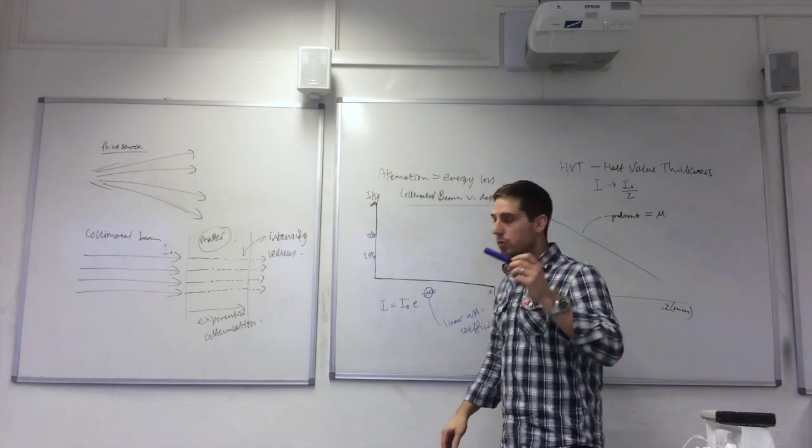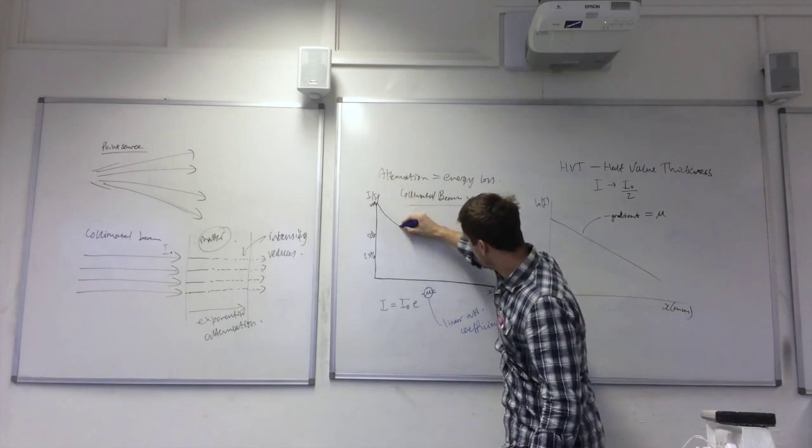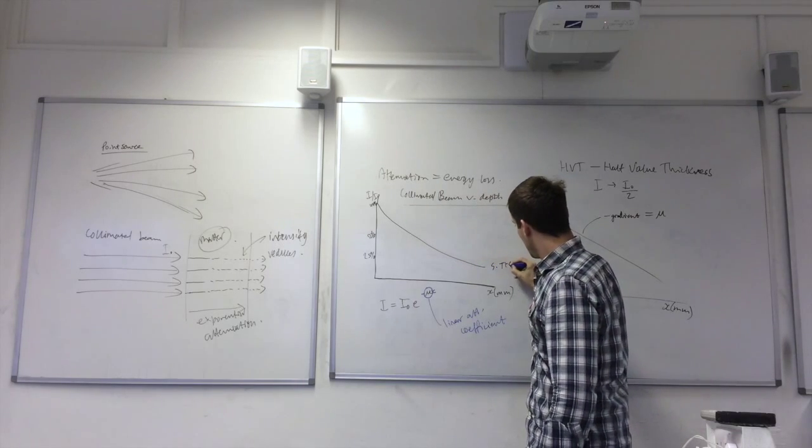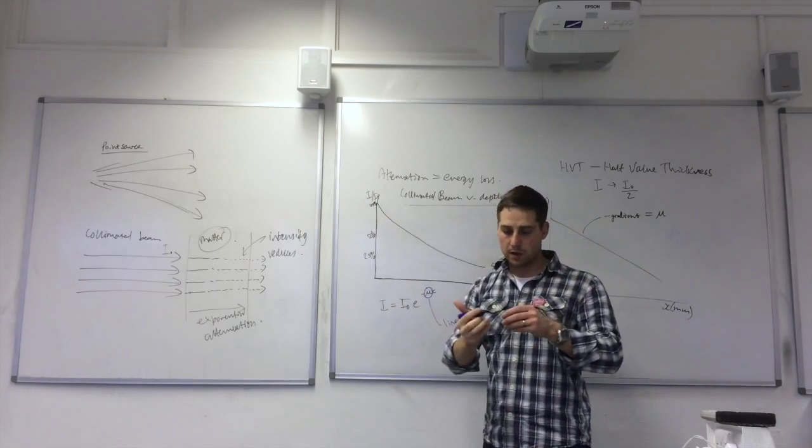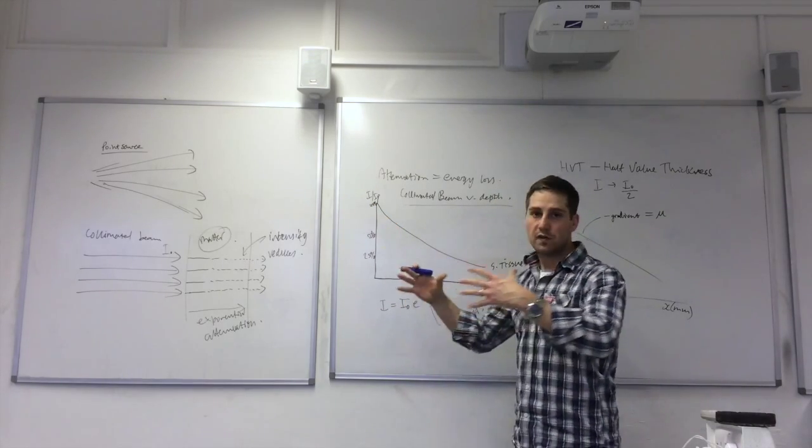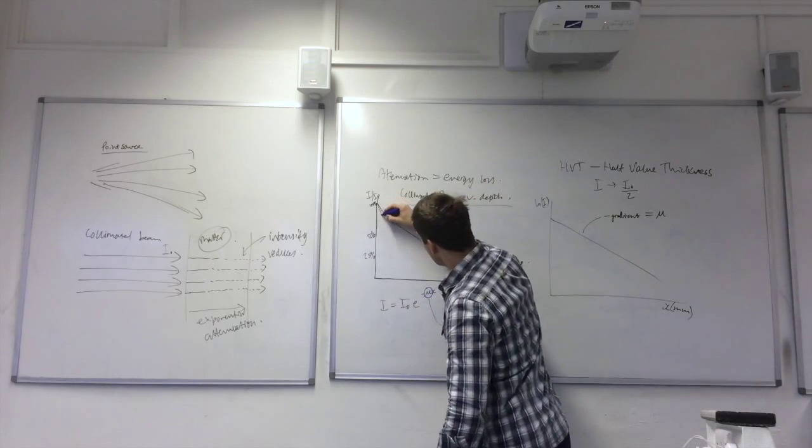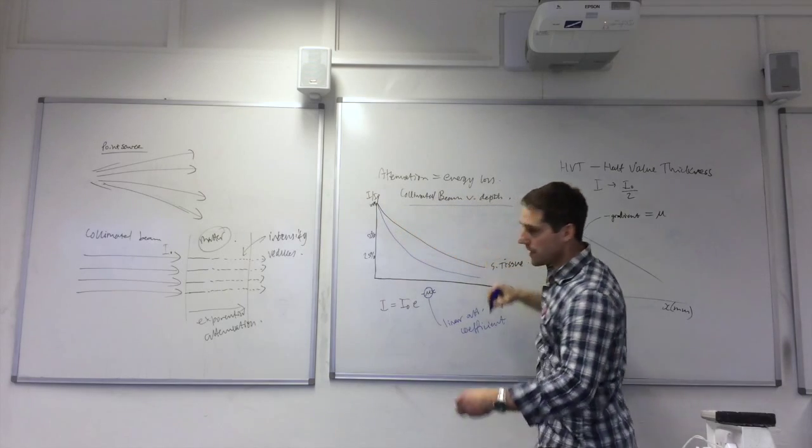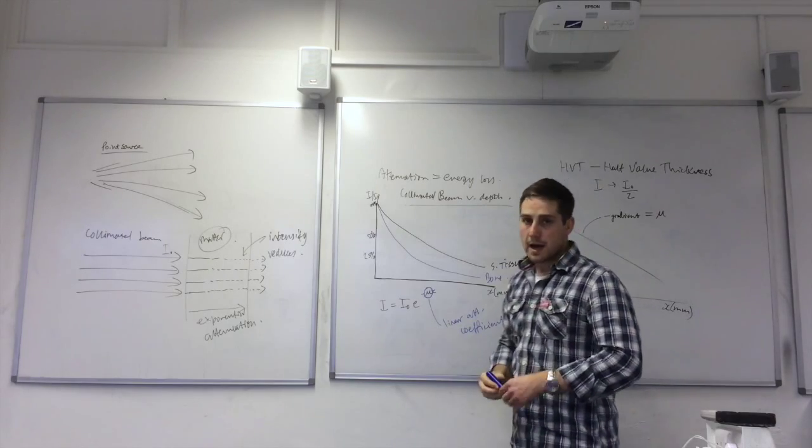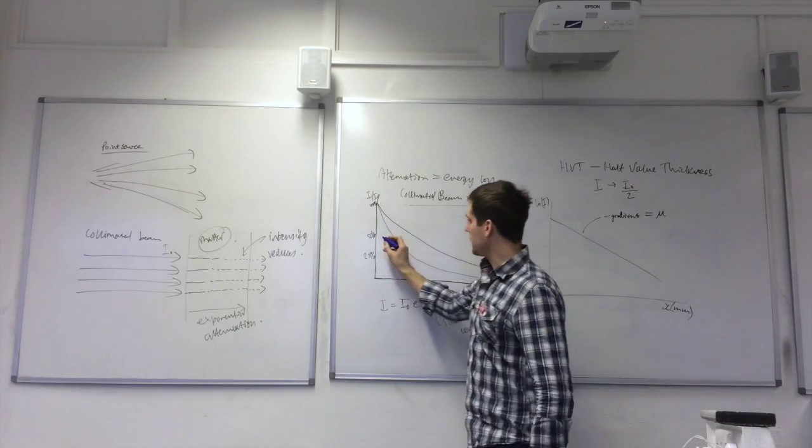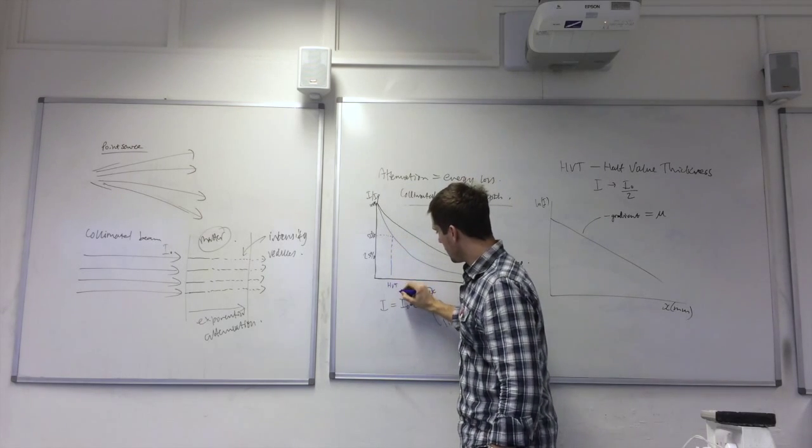So if I plot the graph for soft tissue, then we might get something like this. Both graphs are going to start from 100% because we're plotting them for the same incident intensity. And then if we plot for bone, it attenuates the beam much more quickly. So we have something like that. And you can see that the half value thickness for bone comes to about here.